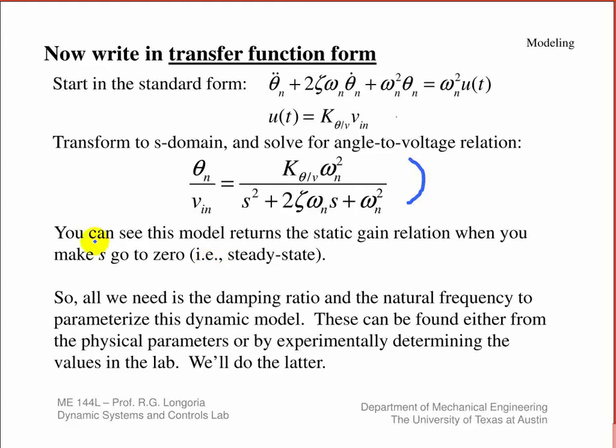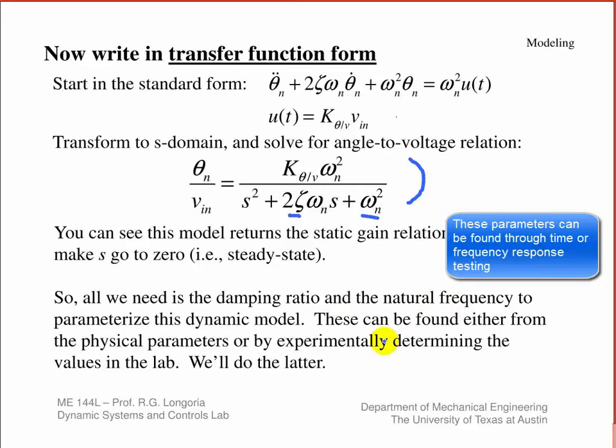Again, I want to emphasize that this model embeds the static gain model. When you talk about it going to a static relation is when these s terms go to zero. Then you can see that theta over v is just k and that's your static or steady-state model. In order for us to have a complete model of the analog meter, you can see it's derived from the basic physics. All we need to do is find zeta and omega_n and we'll be good to go. You're going to do that experimentally in the lab.